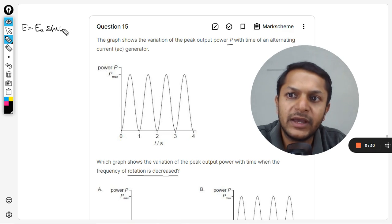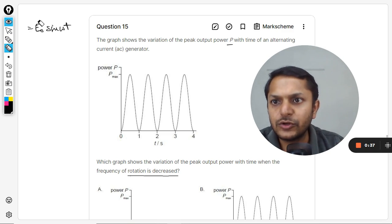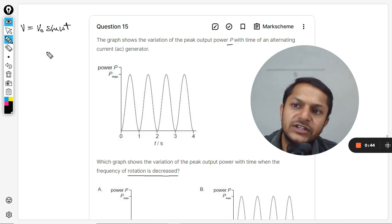E is equal to E naught sine omega t. This is basically the voltage output, so don't get confused. I am going to replace it with V because your books are saying it's V, not E.